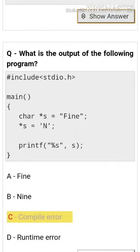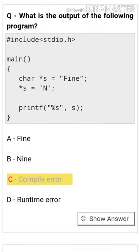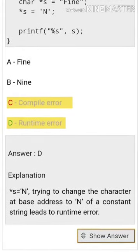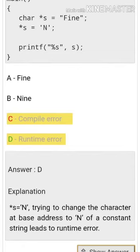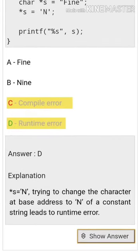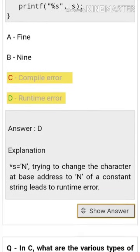What is the output of the following program? The answer is runtime error. The pointer s equals a string, and trying to change the character at the base address of a constant string leads to runtime error.